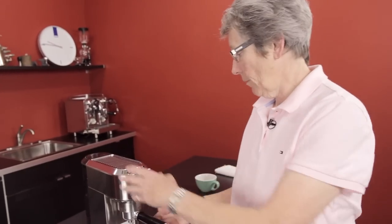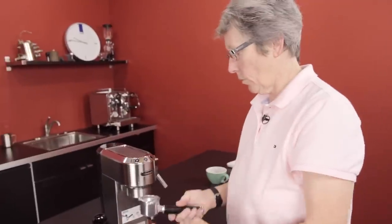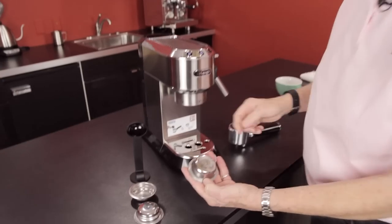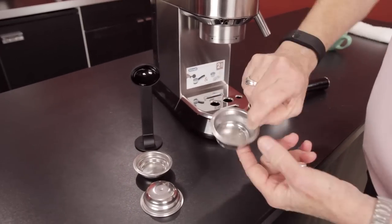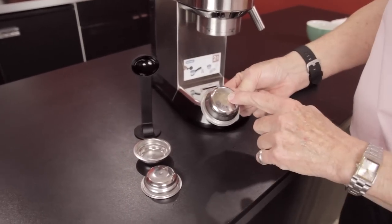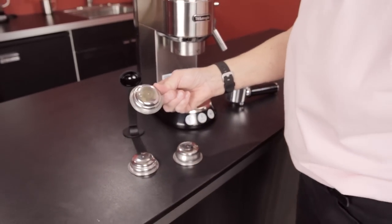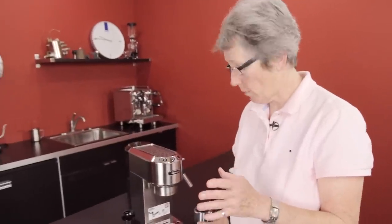Single boiler machine, pressurized baskets that go inside the portafilter and it comes with three baskets. This is the double pressurized and you can see there's a bunch of holes up here, one hole back here, that's what makes for pressurized. Single basket and one for pods which are those little pre-measured coffee packets that look like a tea bag.